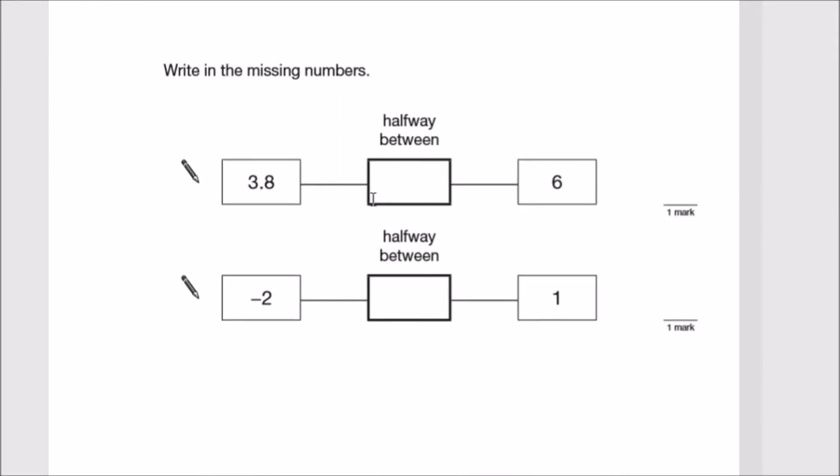Let's add 3.8 and 6, so you should get a total of 9.8. Then let's half this. 2 goes into 9 exactly 4 times remainder 1, and 2 goes into 18 nine times, so it's 4.9.